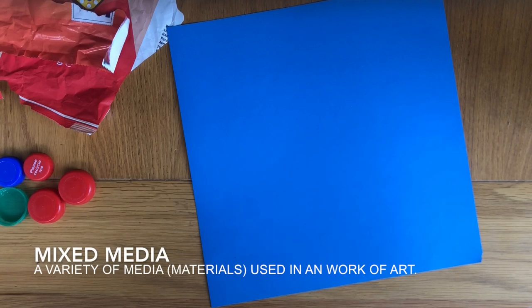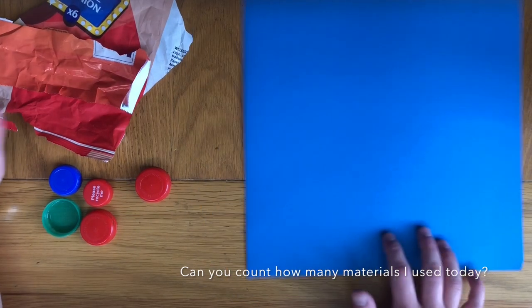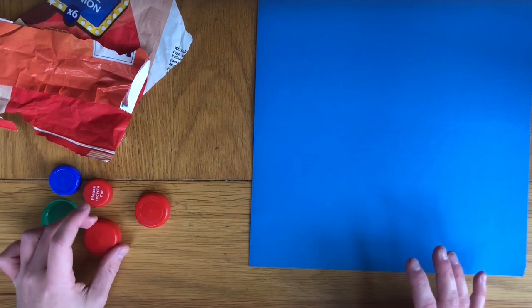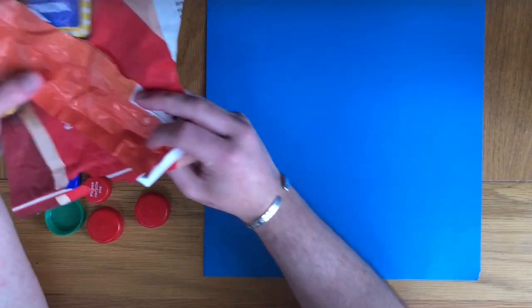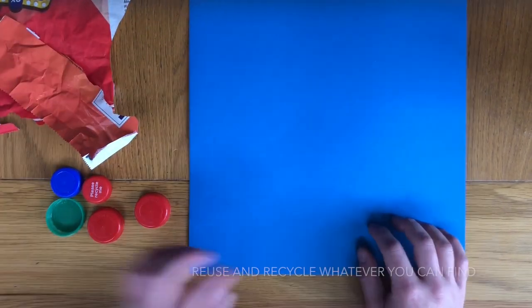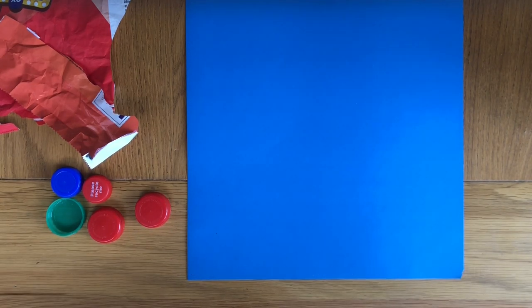Mixed media is where we use lots of different materials in one piece of artwork. Today we're going to be reusing some household items that you hopefully have, like old bottle tops and wrappers from crisps and chips. Have a look around your house to see what else you can find for this piece.